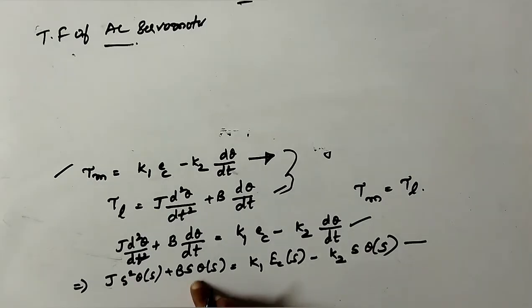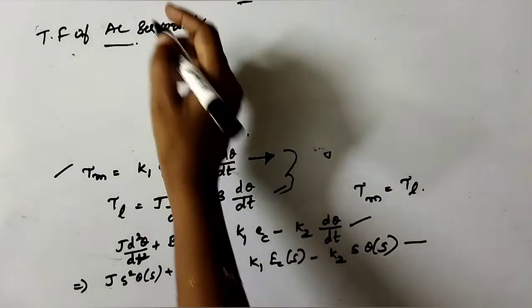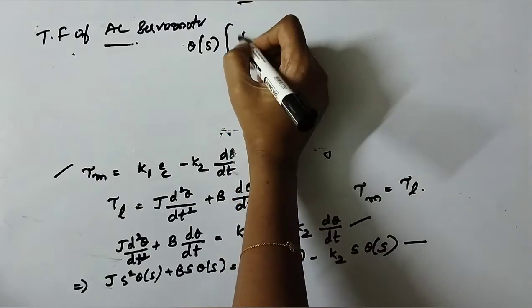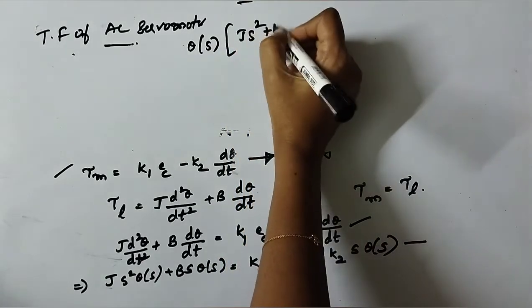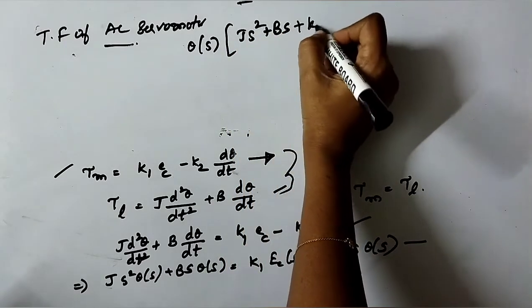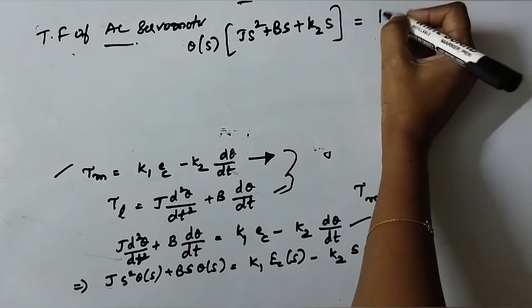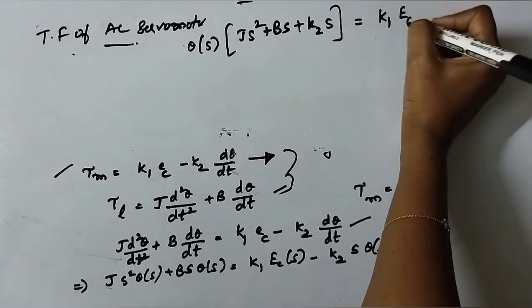J·s² + B·s + K2·s = K1·Ec(s). Ec is nothing but the input voltage.